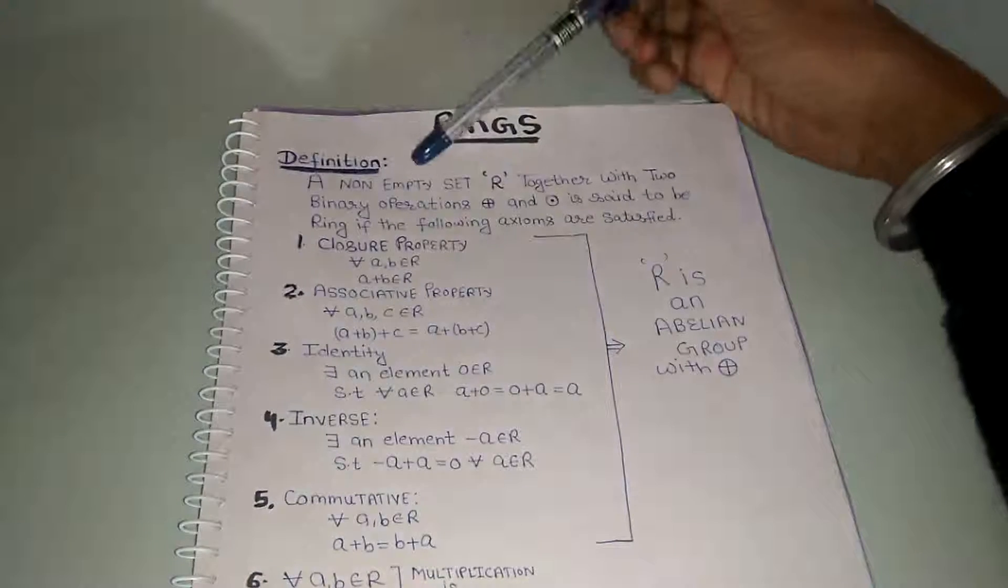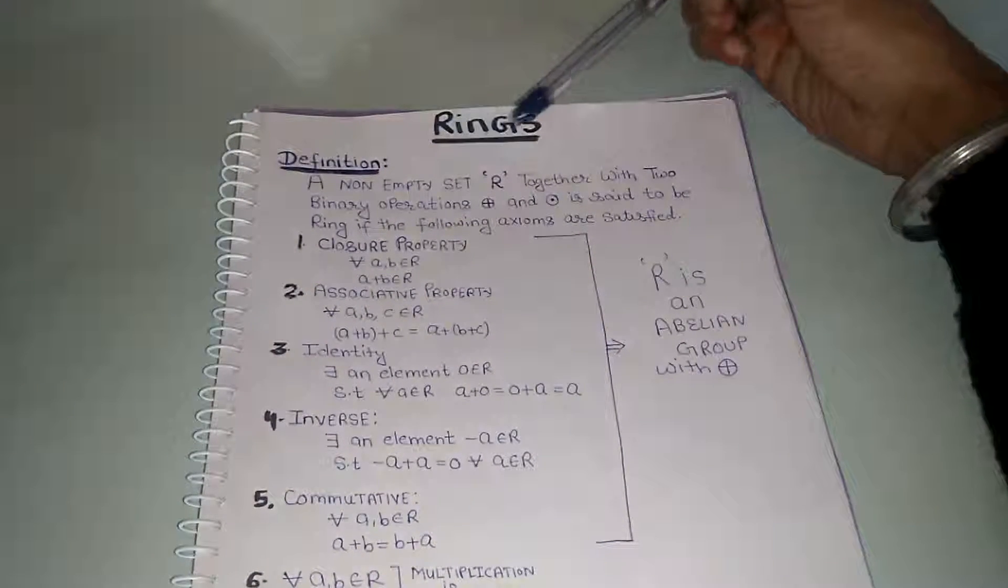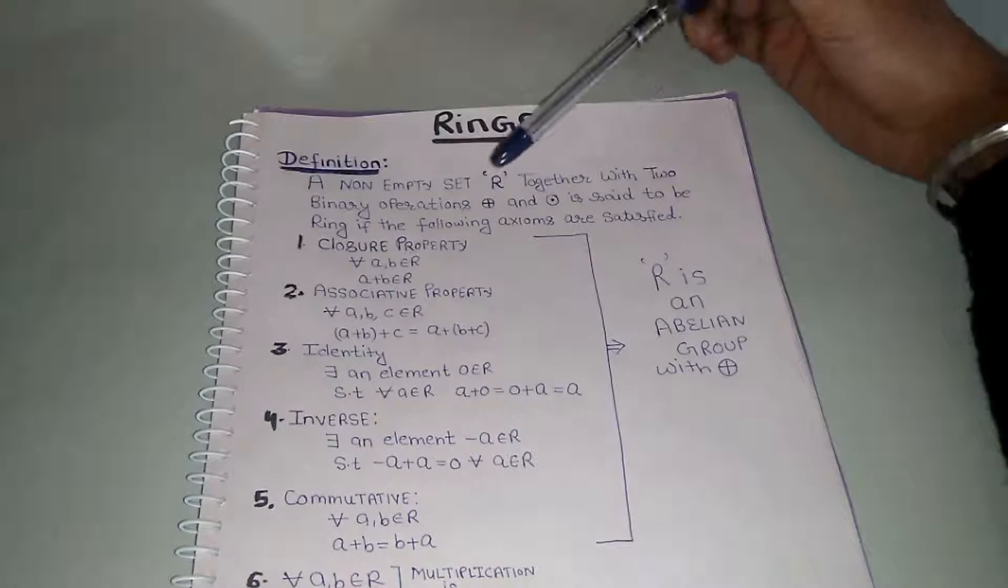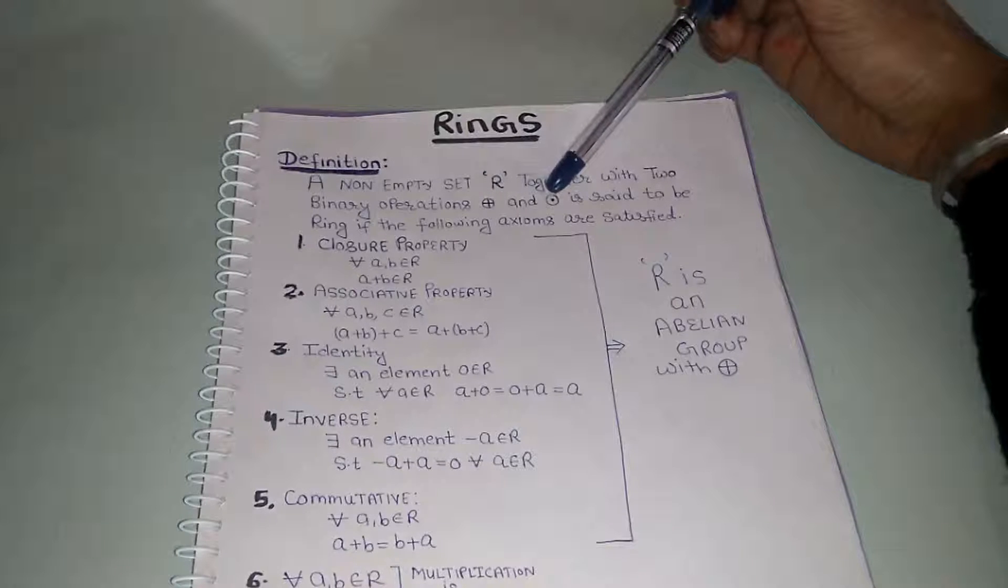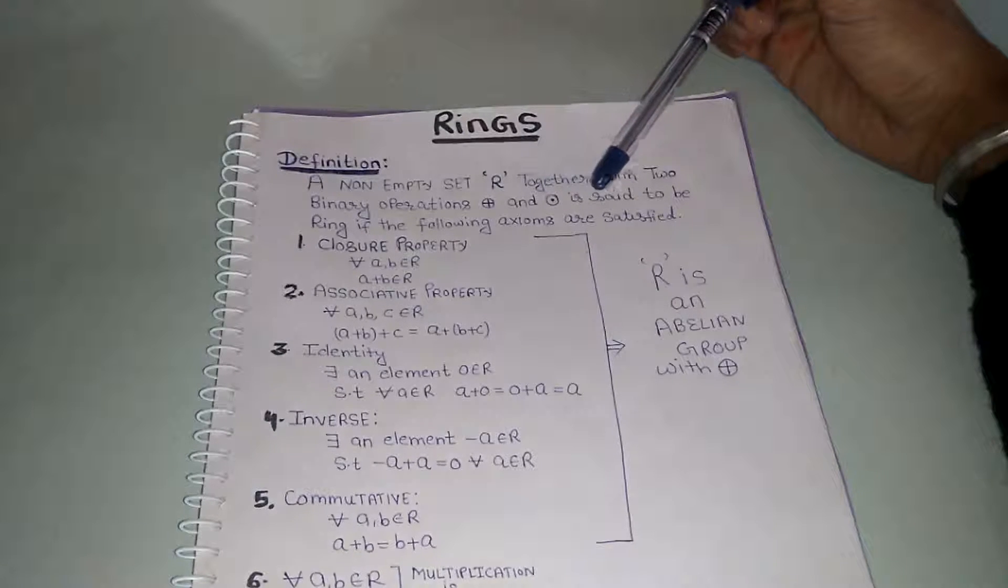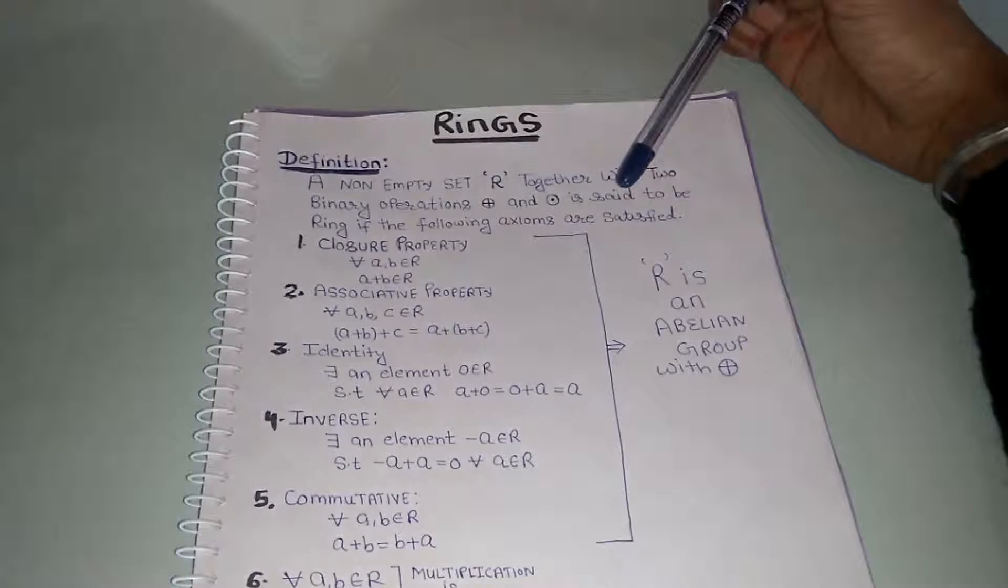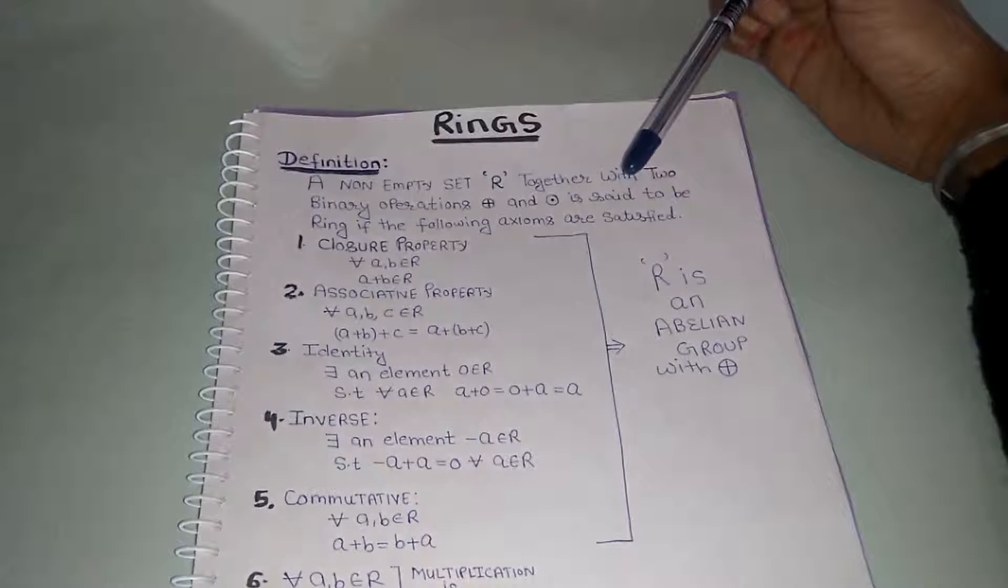A non-empty set together with two binary operations, addition and multiplication, is said to be a ring if following axioms are satisfied.